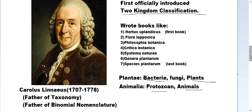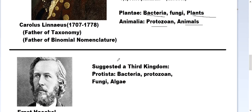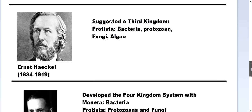Under Linnaeus's two kingdom system, organisms were classified into Plantae and Animalia, with protozoa placed under Animalia. This gave a lot of disadvantages, so classification shifted to the three kingdom system suggested by Ernst Haeckel (1834–1919), who proposed a third kingdom — Protista — containing bacteria, protozoa, fungi, and algae, removing these organisms from Plantae and Animalia to make classification more accurate.